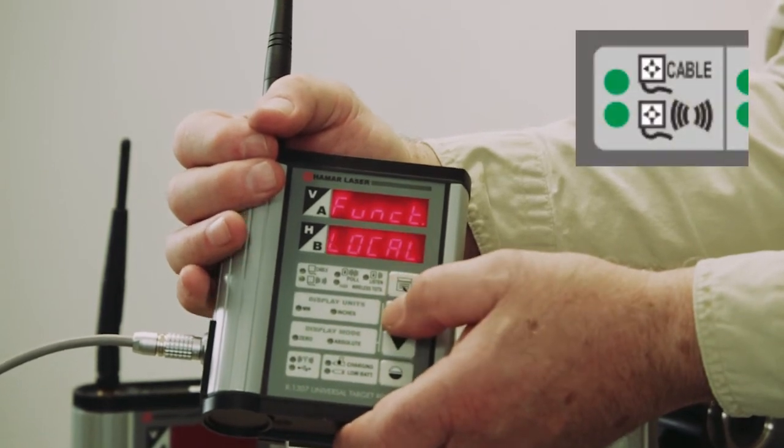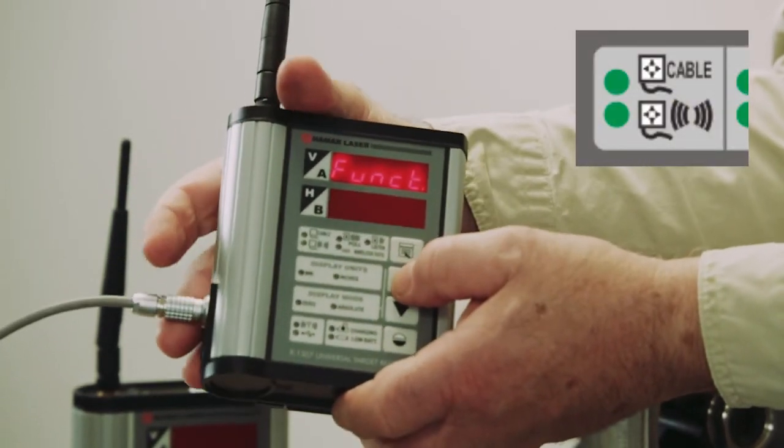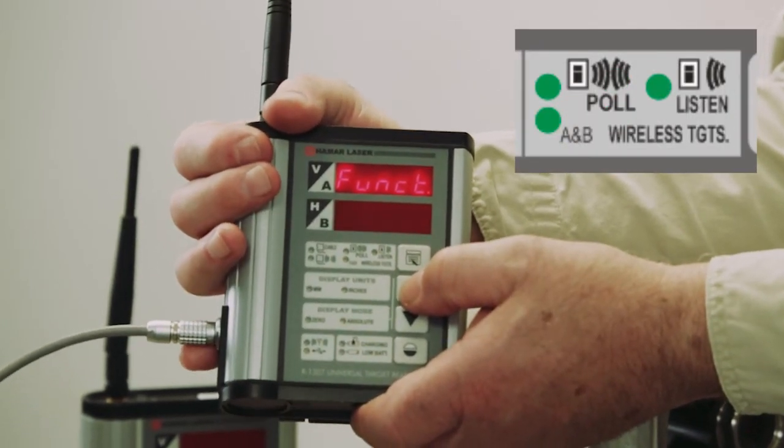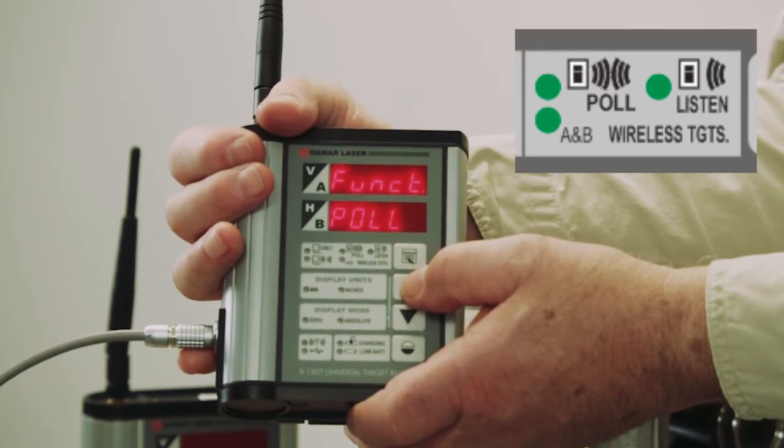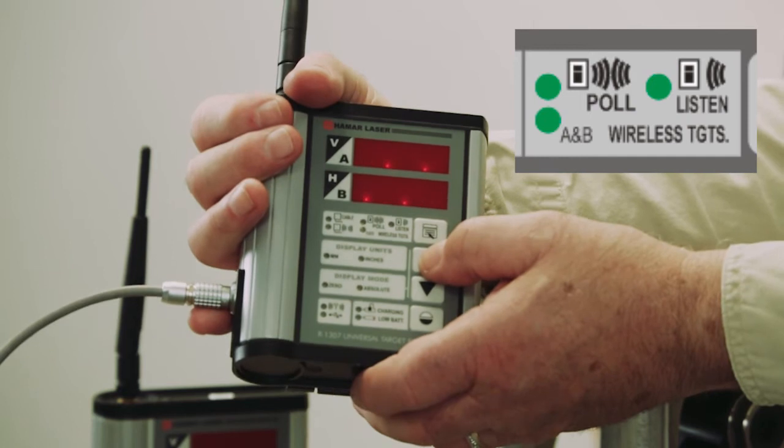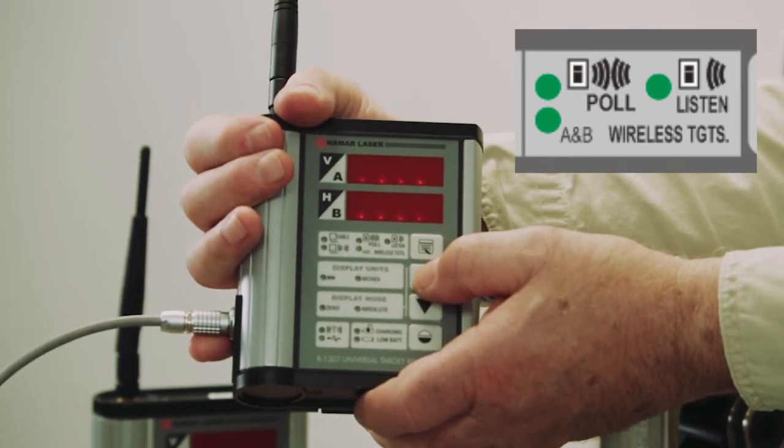The function is local, meaning it's plugged in, it's cabled. If I press this again, this is poll. What I mean by poll is if I'm using an A1519 target or an A1520 target, this will poll and look for those targets.